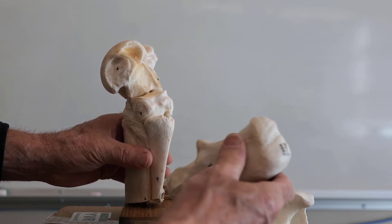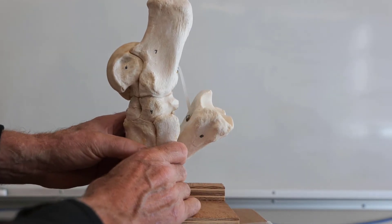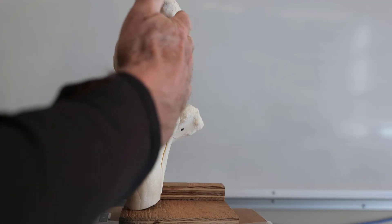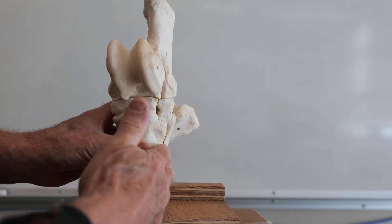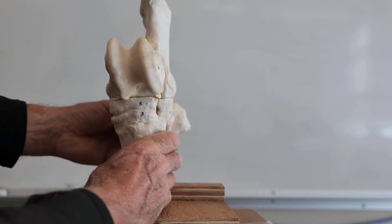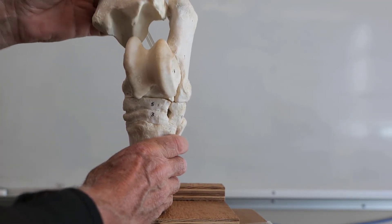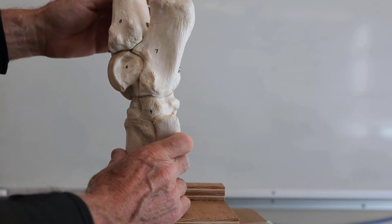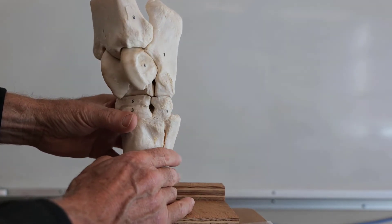The calcaneus forms the back half of the hock, giving it that particular shape. You can see a more or less flush line on the lateral side, but not so much on the medial side — another way to distinguish which leg you're looking at. The tibia sits on top of the talus and is quite a bit longer. So that's the hock of the horse.